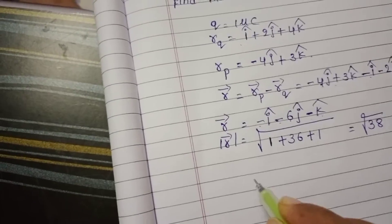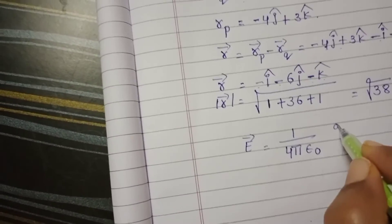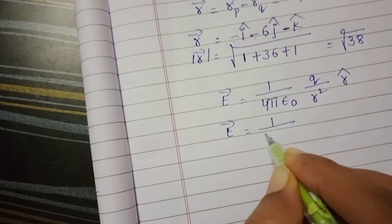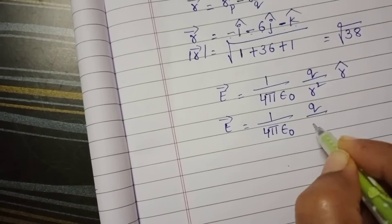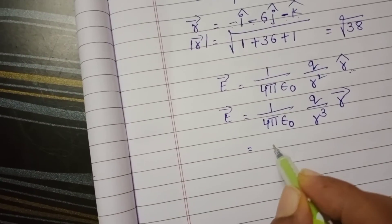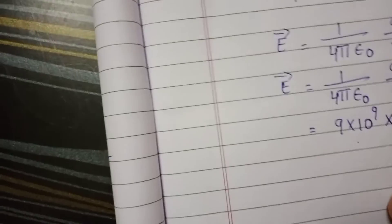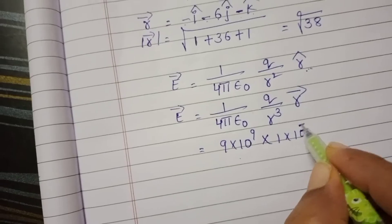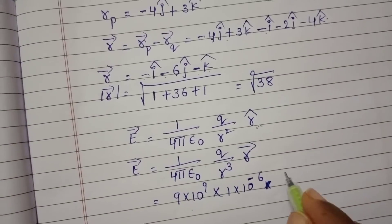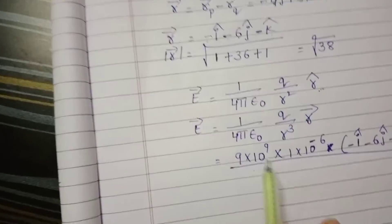The intensity of the electric field at that point, E-bar, equals 1 over 4 pi epsilon-0 times Q over R-squared times R-cap in vector form. Since R-cap equals R-bar over mod R-bar, this becomes E-bar equals 1 over 4 pi epsilon-0 times Q over R-cubed times R-bar. Substituting values: 9 times 10 to the power 9, Q equals 1 microcoulomb equals 1 times 10 to the minus 6, and R-bar equals minus I-cap minus 6 J-cap minus K-cap, divided by R-cubed.